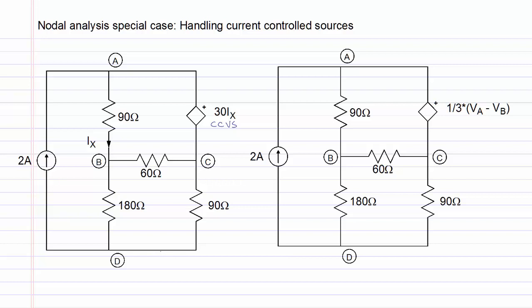Recall that in nodal analysis, we have to select a reference node. We can choose node D as the reference node, in which case the nodal voltages VA, VB, and VC will be the unknown variables for which we will solve using nodal analysis.